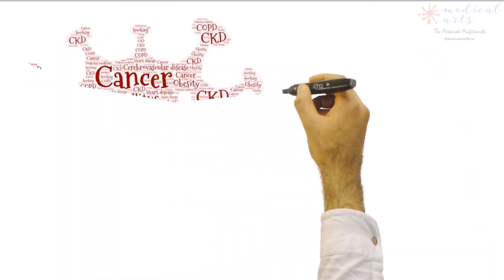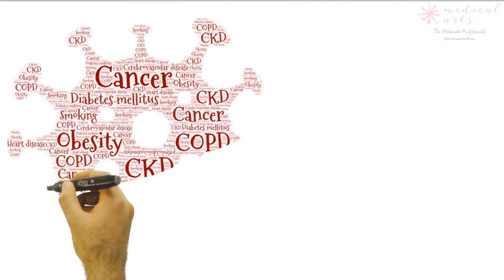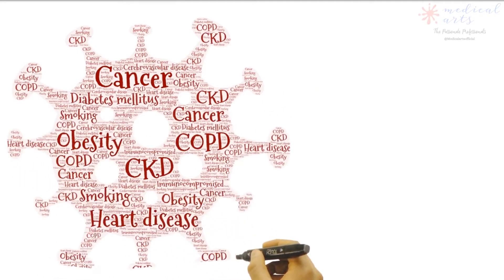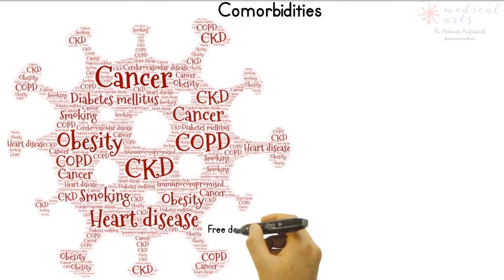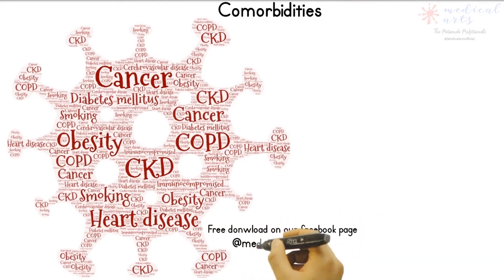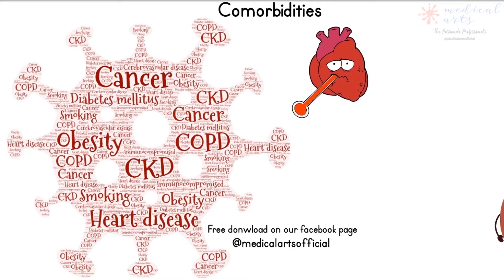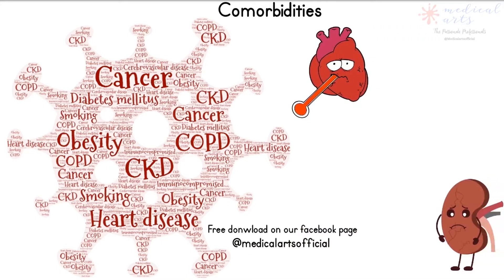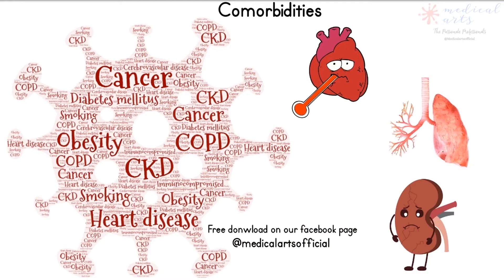Here are some comorbidities that increase the risk of severe COVID-19 illness: COPD (chronic obstructive pulmonary disease), asthma, heart conditions including heart failure, coronary artery disease, and cardiomyopathies, cancer, immunocompromised people, chronic kidney disease, and obesity.